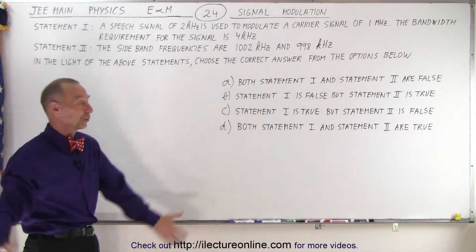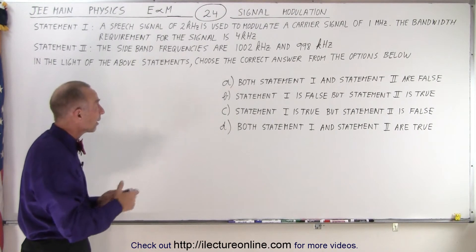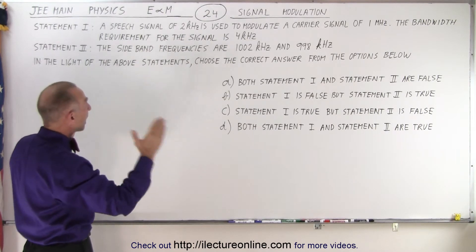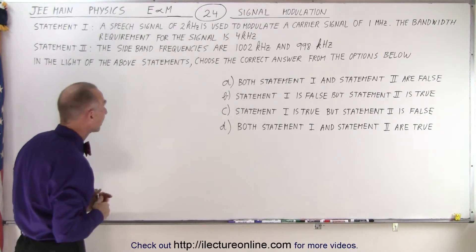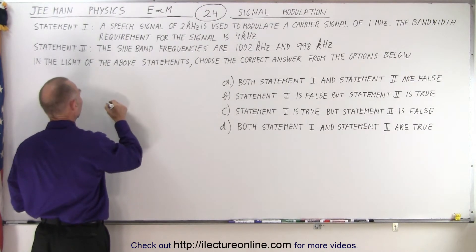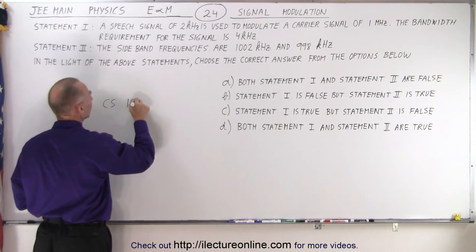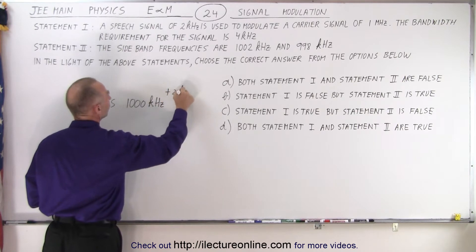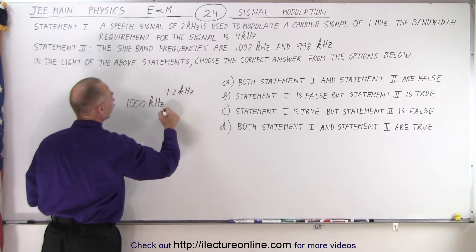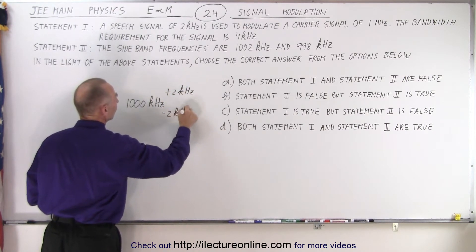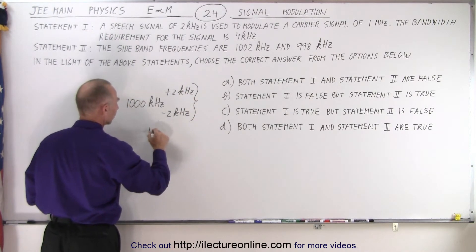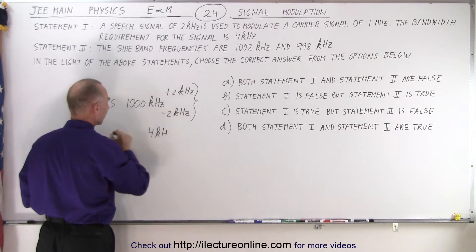It's simply either you know it or you don't. So that means that we can go 2 kilohertz above and 2 kilohertz below. That gives us a total bandwidth of 4 kilohertz. So in other words, we have the carrier signal CS of 1,000 kilohertz. And then we can add 2 kilohertz to that, all the way down to subtract 2 kilohertz from that.